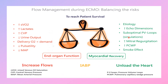Managing patients on peripheral VA ECMO is a challenge. We need to balance between increasing the flow and unloading the heart. Sometimes we need to increase the flow to avoid end-organ dysfunction. That will happen when there is increased oxygen consumption, increasing lactate, increased central venous pressure, decreased urine output, oxygen demand within oxygen delivery, and decreased pulsatility on arterial blood pressure.